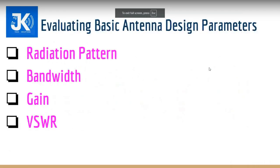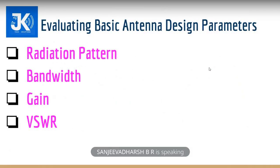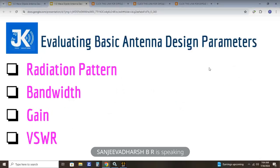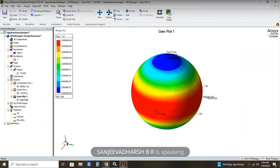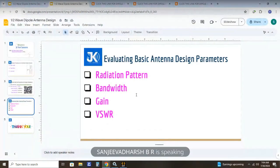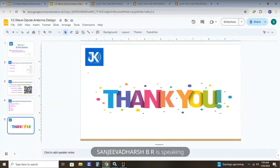These are all the parameters we have obtained: radiation pattern, bandwidth, gain, and VSWR. These four parameters have been evaluated in the ANSYS HFSS tool. So radiation pattern, bandwidth, gain, and VSWR — all four parameters have been obtained in HFSS software. Thank you so much for watching the video. I hope to see you again in the next video.